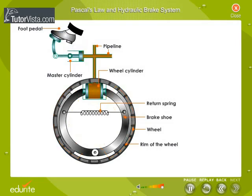When the brakes are applied, the foot pedal is pushed, due to which pressure is exerted on the fluid in the master cylinder. This pressure is transmitted equally and undiminished throughout the fluid and to the pistons of the wheel cylinder. Therefore, the pistons get pushed outwards and the brake shoes get pressed against the rim of the wheel, due to which the motion retards.